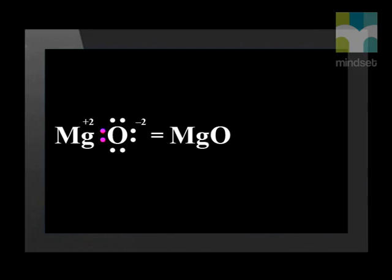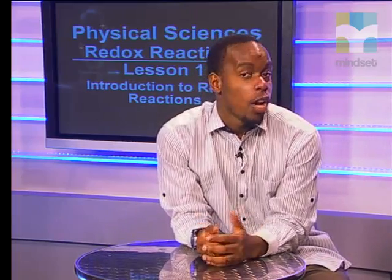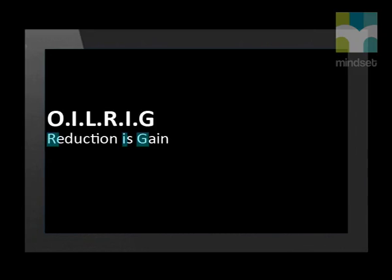Earlier we said that the loss of electrons is called oxidation and the gain of electrons is called reduction. We use a simple acronym OIL RIG to represent this: Oxidation Is Loss of electrons, Reduction Is Gain of electrons.